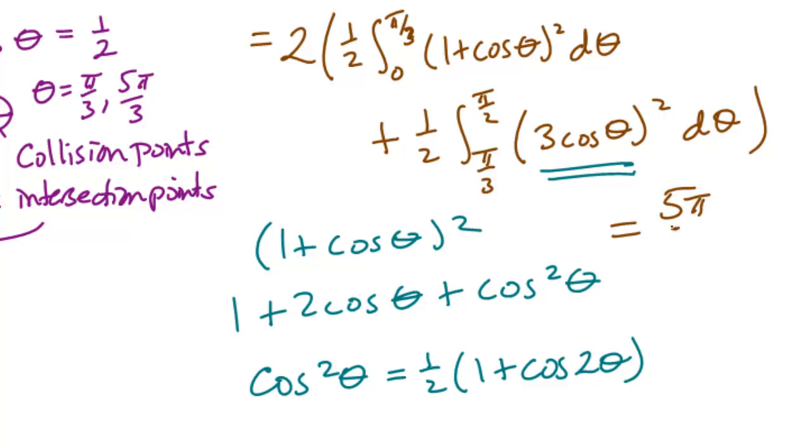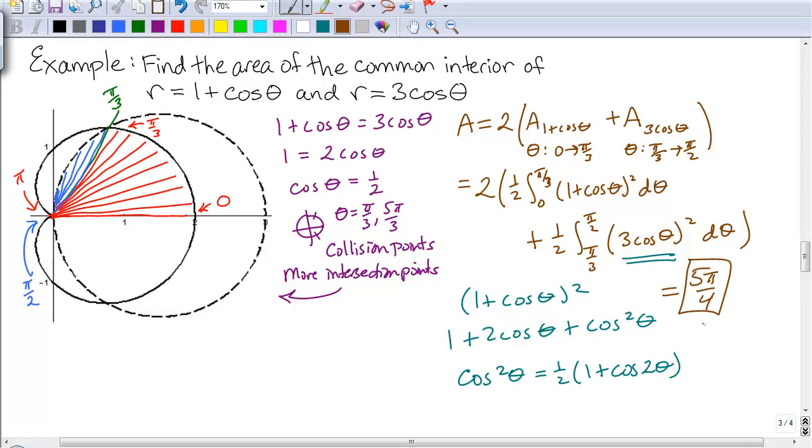The answer is 5 pi over 4. This includes the entire interior that we're looking for. Remember, we already accounted for the 2 when we set up our plan. Don't forget to make sure that you actually found the entire area that you're looking for.